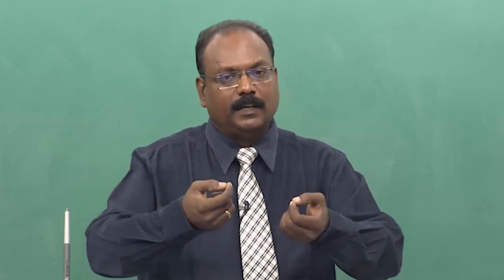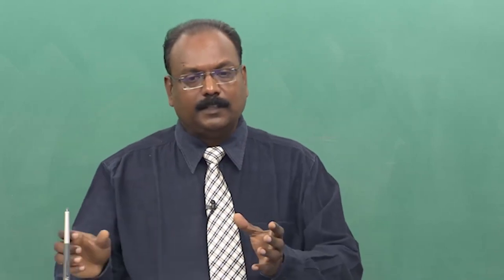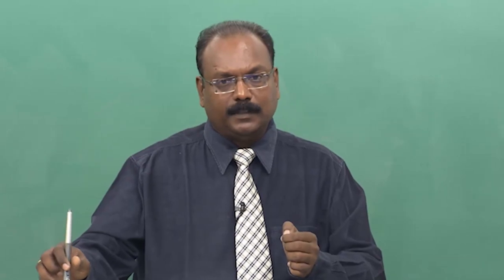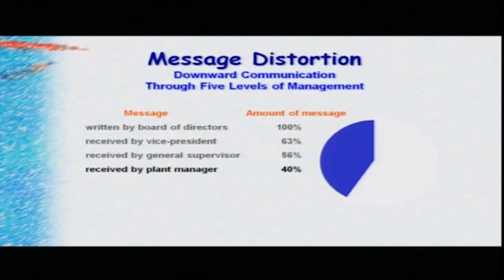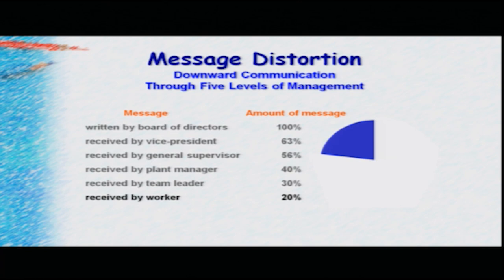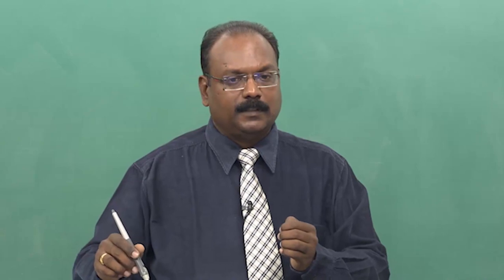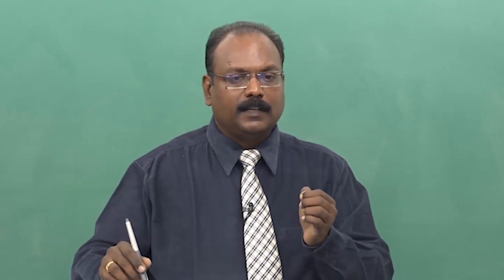The general supervisor again goes by 56 percent. By the time it reached the plant manager, it became 40 percent, and when it reached the team leader, it became 30 percent. You can see the levels at which the message is getting distorted. Finally, the worker who is supposed to implement this — when it reaches him — it became just 20 percent. So from 100 percent from the board of directors, when it got to the worker, it actually became 20 percent. That is the level of distortion that is possible, and one has to be very careful.